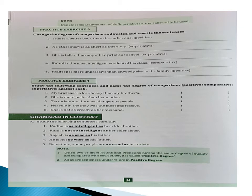So here: 'No other book in the earlier is as good as this book.' Got the point? No other book in the earlier is as good as this one. See the second sentence: 'No other story is as short as this story.' We have to change this into superlative degree, so we use the superlative form of the adjective.